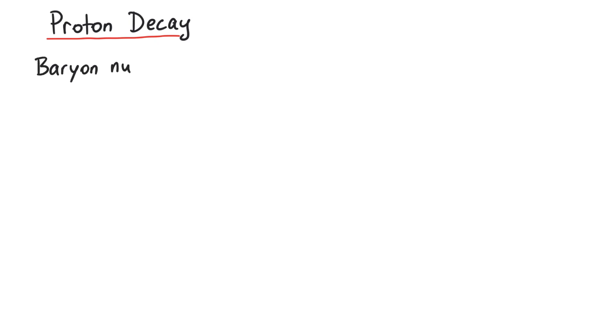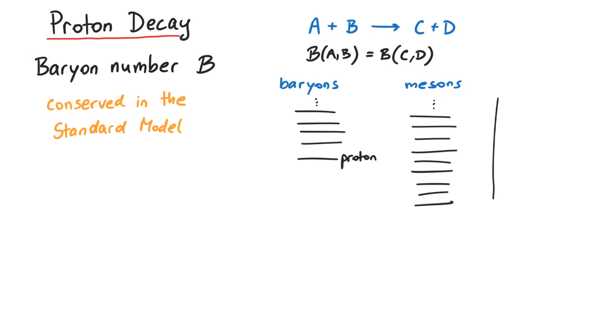One of the conserved quantities of the standard model is the baryon number. This means that in any given process the number of baryons in total does not change. Now since the proton is the lightest baryon we know, there is just no possible decay product available.